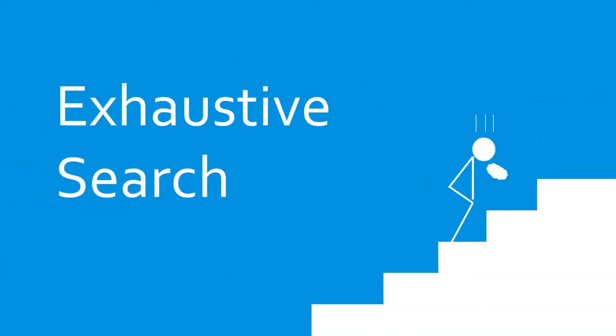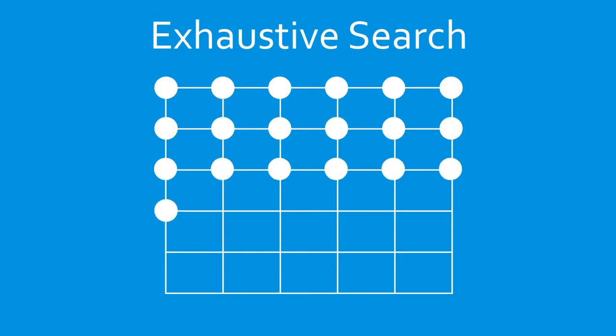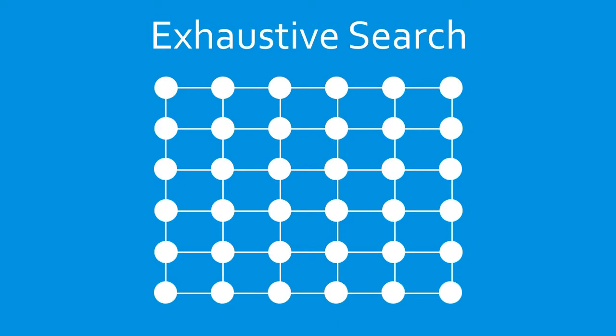First off, exhaustive search. The simplest and most inefficient gradient-free optimization method is to try every possible solution, and pick the best possible answer. While this approach may work for very small problems, with larger problems it quickly becomes impossible.